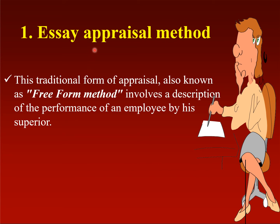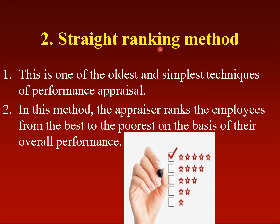Under traditional methods, the first is the essay appraisal method, also called the free-form method. It involves a description of an employee's performance by his superior, who writes the description as he or she feels. It is a purely subjective-based method. The second is the straight ranking method — one of the oldest and simplest techniques of performance appraisal, where the evaluator ranks employees from best to poorest based on overall performance, similar to a 1-star to 5-star rating.